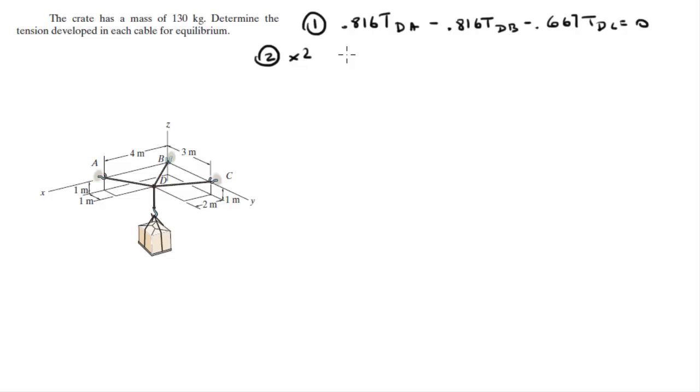And you rewrite equation 2, but you multiply by 2, and you write it right below, and you get minus 0.816 TDA minus 0.816 TDB plus 1.333 TDC is equal to 0. You add them together, the TDC cancel out.